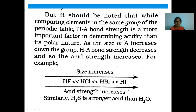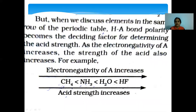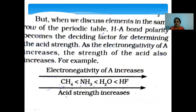H₂S is a stronger acid than H₂O for the same reason. For elements in the same row of the periodic table, H-A bond polarity becomes the deciding factor for acid strength. As electronegativity of A increases, the strength of the acid also increases. For example, among CH₄, NH₃, H₂O, and HF, bond polarity is the deciding factor, and since electronegativity of A increases across the row, HF is the strongest acid among them.